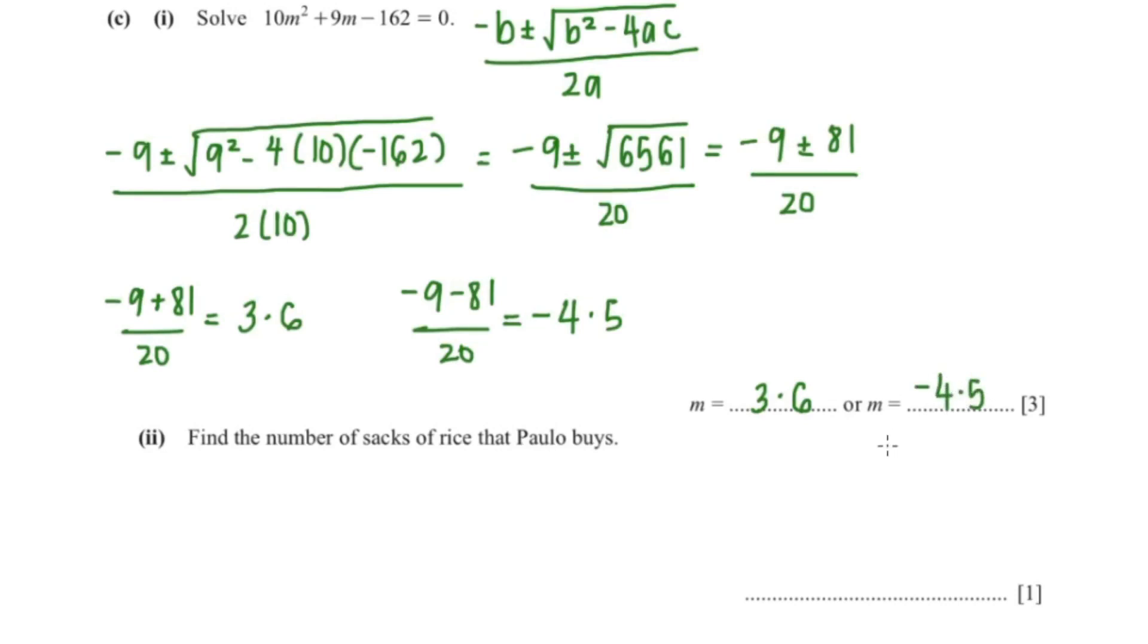The next question wants us to find the number of rice that Paula buys. So we will use the positive number because you can't have a negative number. So the expression for Paula is 72 over M. So Paula would buy 72 over 3.6 which is 20 sacks. So in conclusion Paula buys 20 sacks of rice.